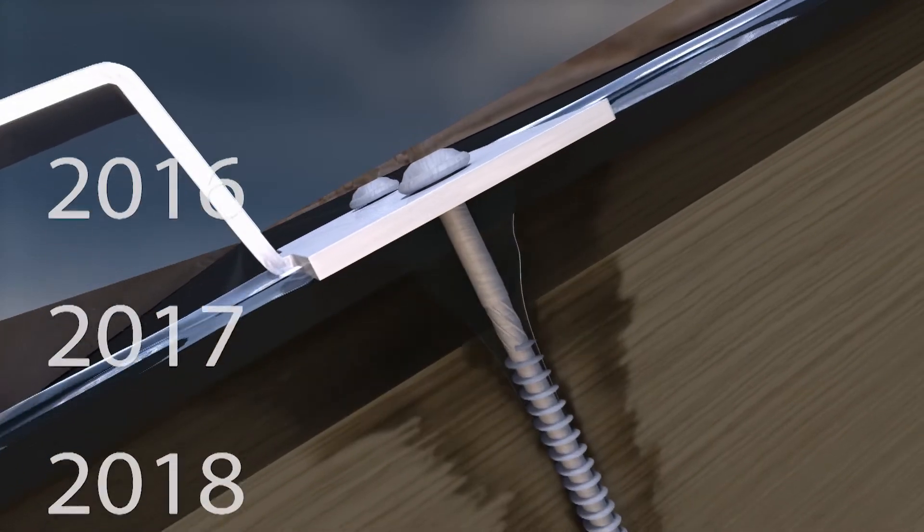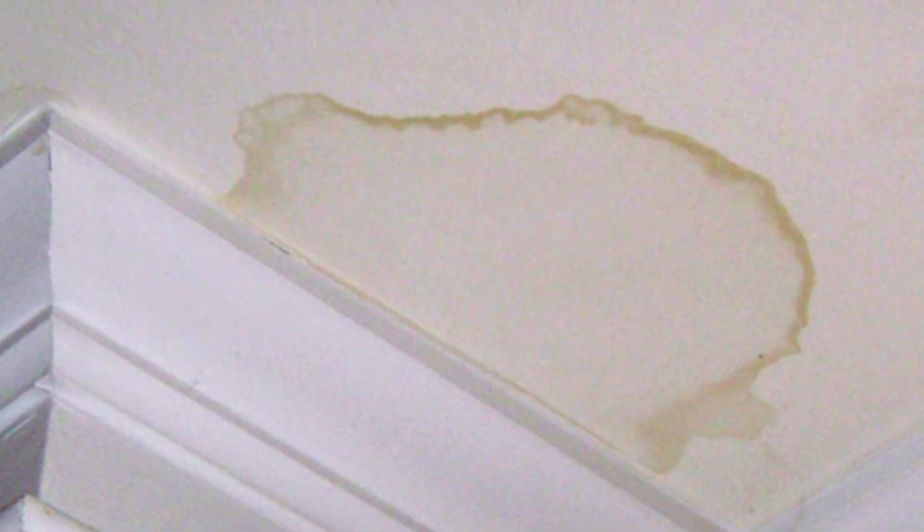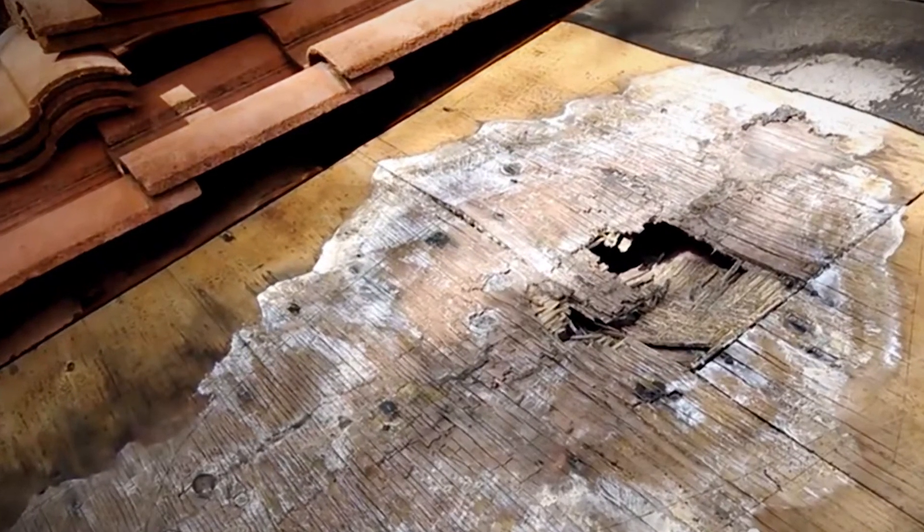Water seepage through an improperly flashed penetration is likely down the road, which can lead to rot and mold requiring costly removal and remounting of the solar array and possibly even a new roof.